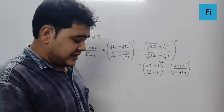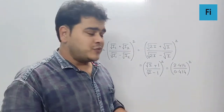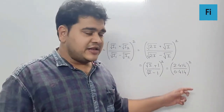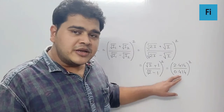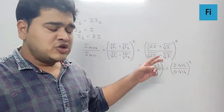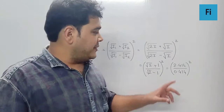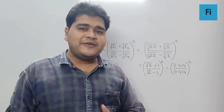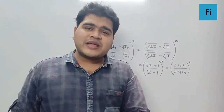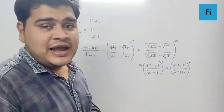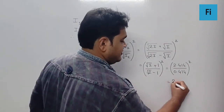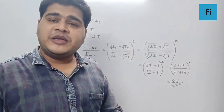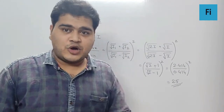Notice that 0.414 is very close to 0.5, so the denominator ≈ 0.5, which effectively doubles the numerator: 2.414 × 2 ≈ 4.828 ≈ 5. Squaring that gives the final answer of 25. So Imax / Imin = 25.